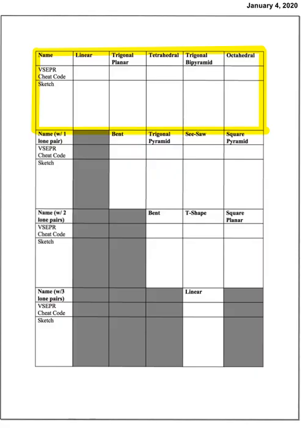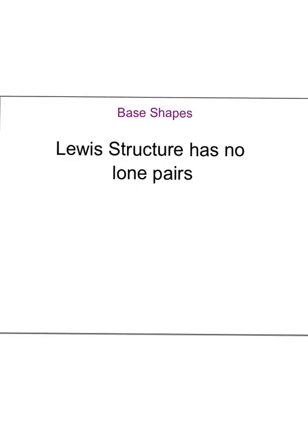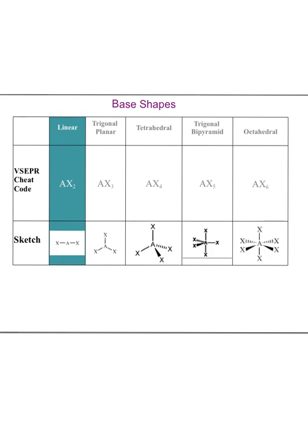On the second page of your note packet, we're going to fill out the highlighted region first — those are called base shapes, meaning Lewis structures with no lone pairs on the central atom. First, fill in the linear column. The cheat code for linear is AX2 — a central atom with two bonded atoms. Linear has a bond angle of 180 degrees because the two atoms want to be as far from each other as possible.